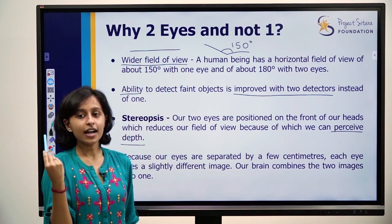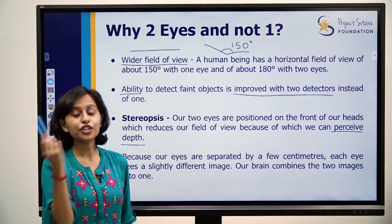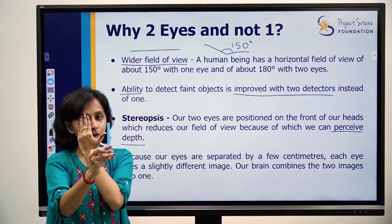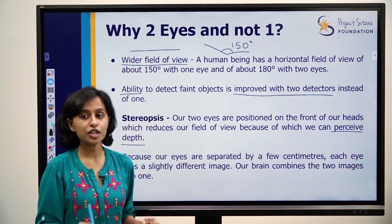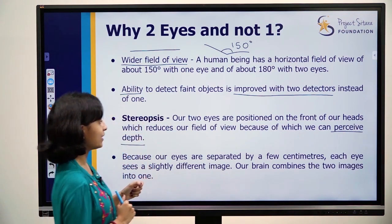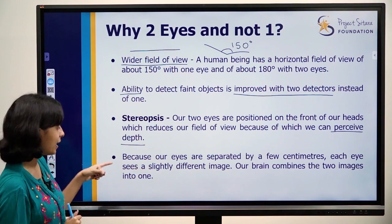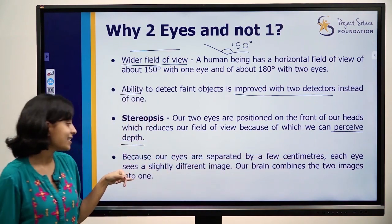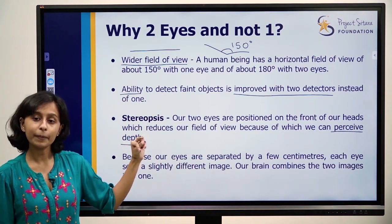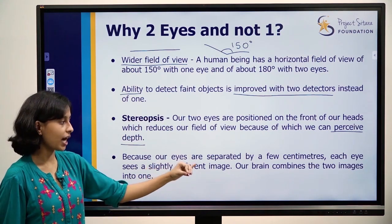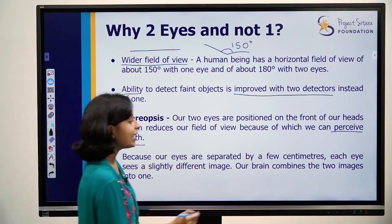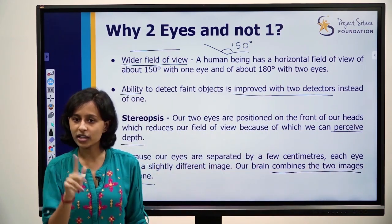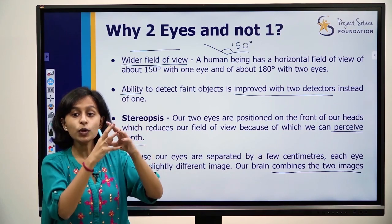Why does it shift? As we learnt in previous classes — when it shifts, how many images do we see? We see two different images. In one eye, one image forms; in the other eye, a different image forms. Because our eyes are separated by a few centimetres, each eye sees a slightly different image. Our brain is a very powerful tool — it combines the two images to form one, so we can understand depth.